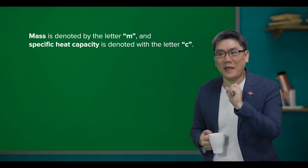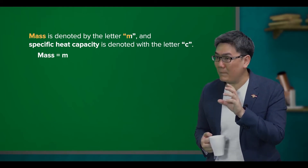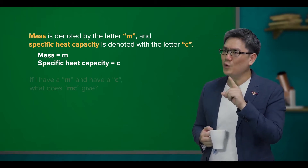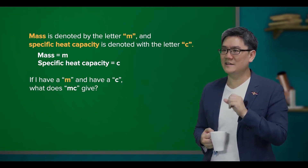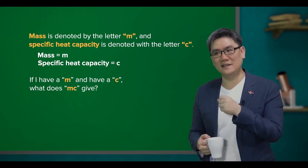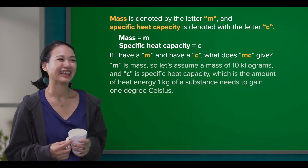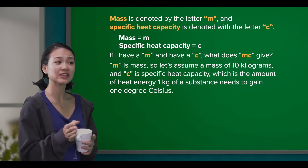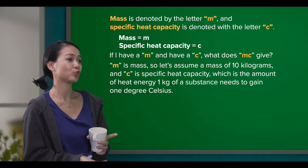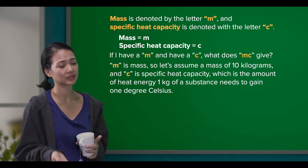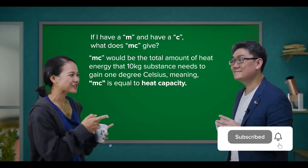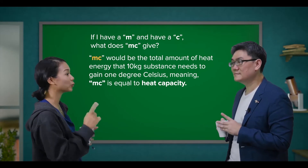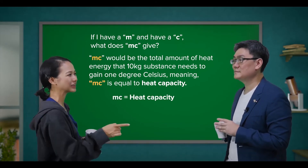Easy peasy. Good. Mass is denoted by the letter M, and specific heat capacity is denoted by the letter C. So, if I have M and C, what does MC give me? M is mass, so let's assume a mass of 10 kilograms. And C is the specific heat capacity, which is the amount of heat energy 1 kg of a substance needs to gain 1 degree Celsius. MC would be the total amount of heat energy that a 10 kg substance needs to gain 1 degree Celsius, meaning MC is equal to heat capacity.